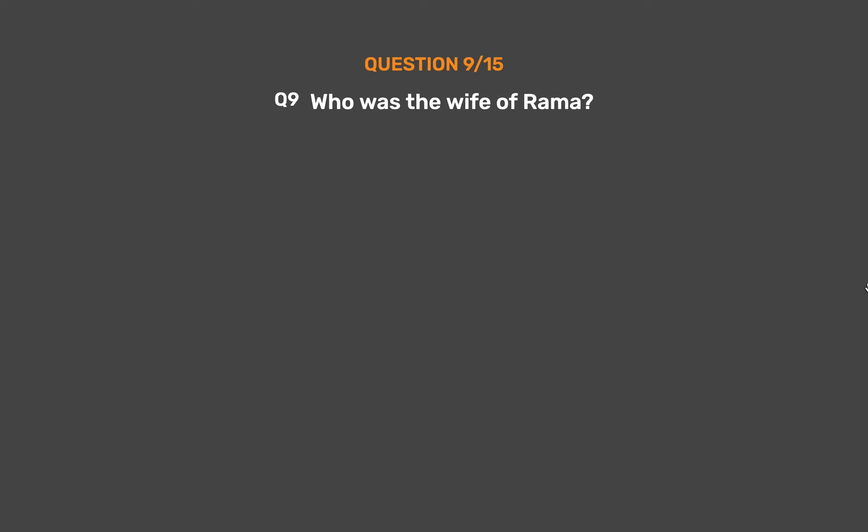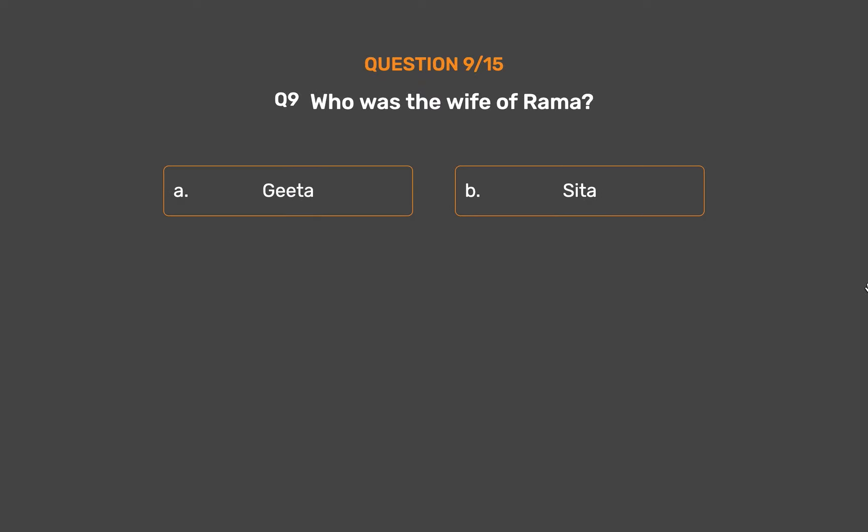Question No. 9. Who was the wife of Rama? Option A: Geeta. Option B: Sita. Option C: Madhavi. Option D: Kannagi.